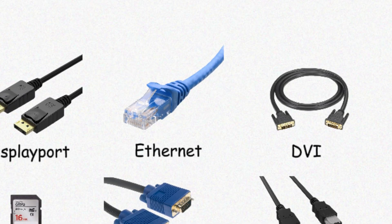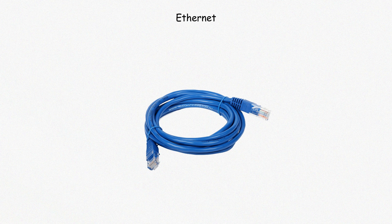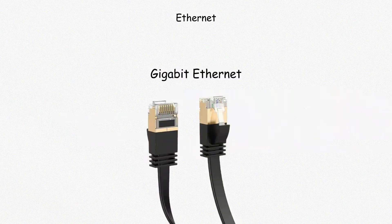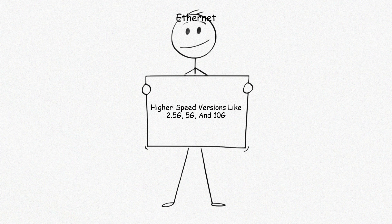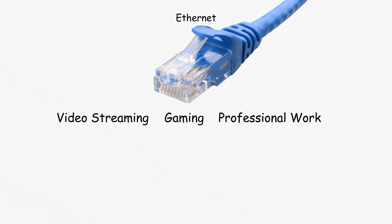Ethernet, or RJ45, connects computers to wired networks. It's wider than a phone jack and has eight metal contacts, supporting faster and more stable internet than Wi-Fi. Fast Ethernet delivers 100 megabits per second, and Gigabit Ethernet supports 1 gigabit per second. Higher speed versions like 2.5G, 5G, and 10G require newer cables and network equipment. Wired Ethernet is used for gaming, video streaming, and professional work where latency matters.